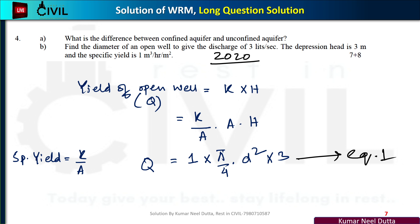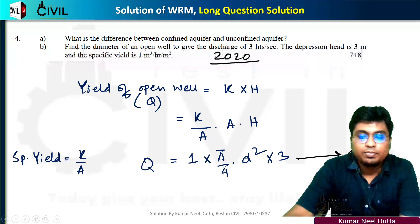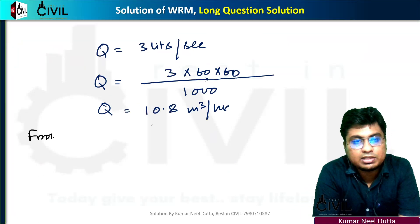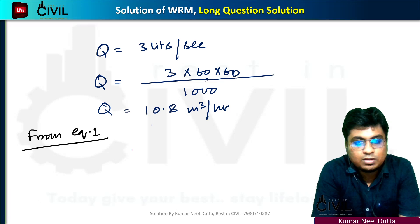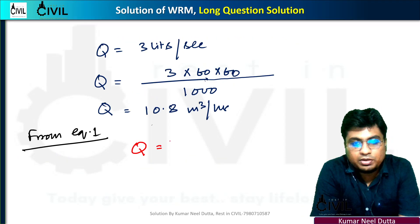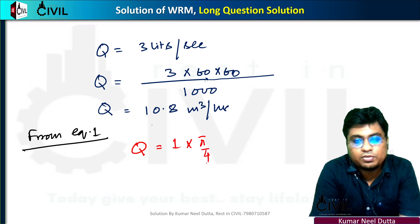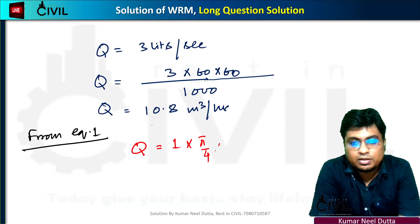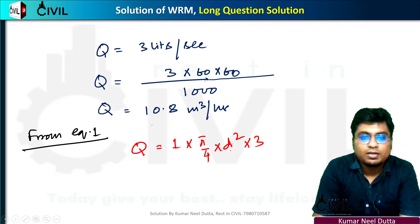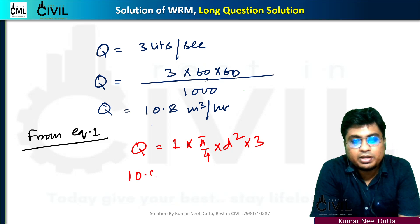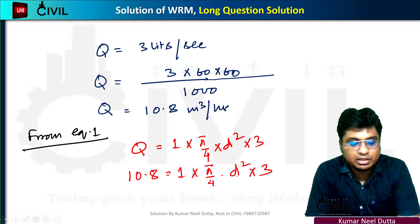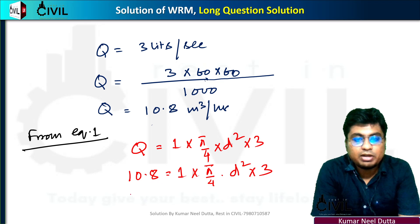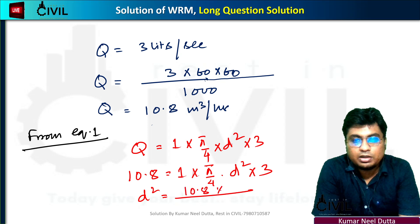From equation 1: Q equals 1 times π/4 times d squared times 3. So 10.8 equals π/4 times d squared times 3, which gives 10.8 times 4 divided by π times 3.